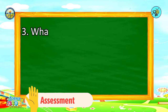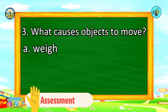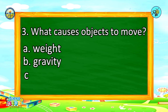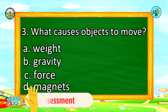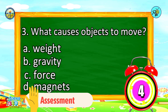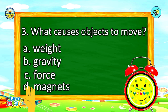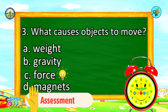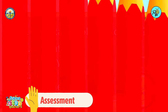Number 3: What causes an object to move? A. Weight, B. Gravity, C. Force, D. Magnets. Time is up! If your answer is letter C — Force, that's correct!